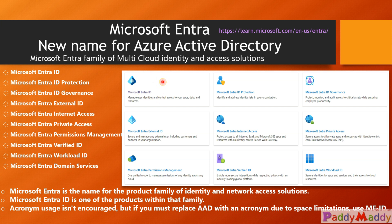Licensing will be covered in a separate lecture, but you need to have certain licensing levels such as P1, P2, or Entra identity-specific licenses. If your company is a government organization, you need to follow governance, compliance, and regulatory policies and use the appropriate identity tier.